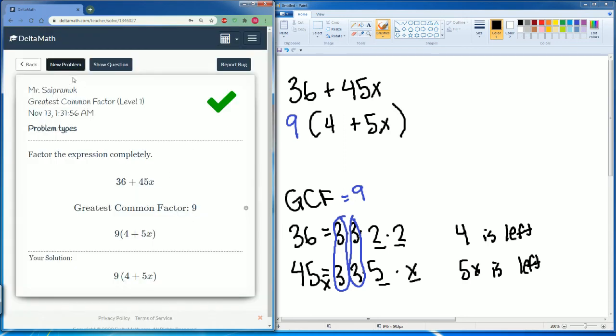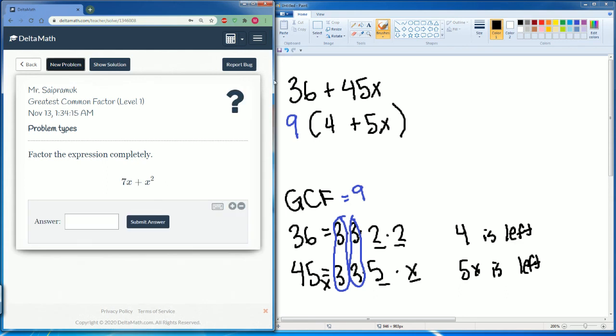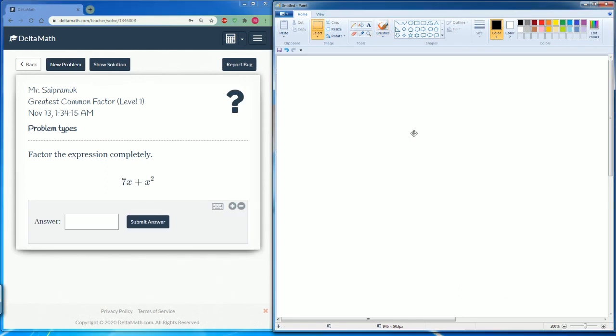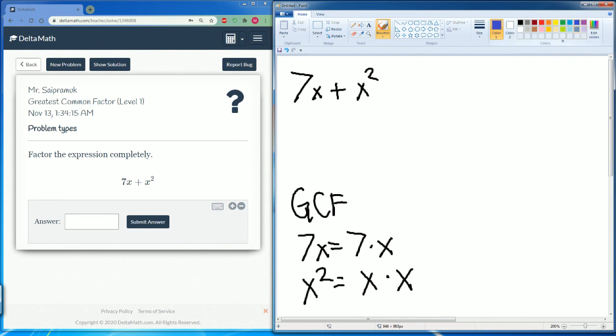Alright, let's do one last problem. We have 7x plus x squared. Let's find the greatest common factor first. 7x can be broken down into 7 times x. x squared can be broken down into x times x. The greatest common factor would just be one pair of x's, so we can just say it's just x.